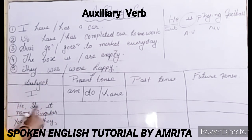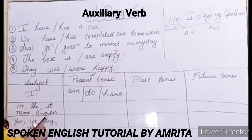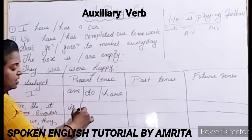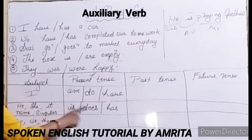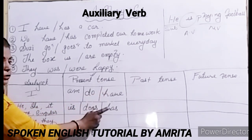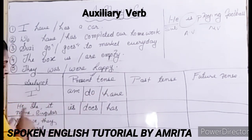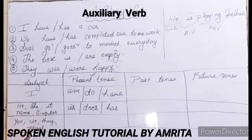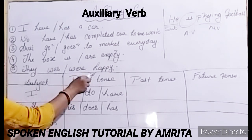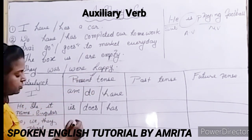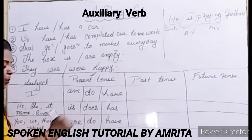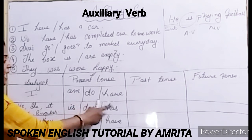He, she, it, name, and singular — just repeat this a few times so it goes into your brain. With he, she, it, name, singular in present tense, you are going to use 'is,' 'does,' and 'has.' Instead of 'have,' we use 'has' — like 'he is,' 'she does,' 'he has,' 'she has.' Now the third group: you, we, they, and plural. With these in present tense, the auxiliary verbs are 'are,' 'do,' and 'have.' For example, 'we have done the work' is correct, but 'we has done the work' is wrong.